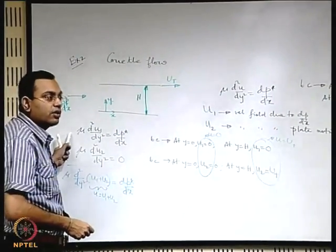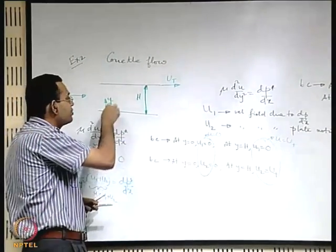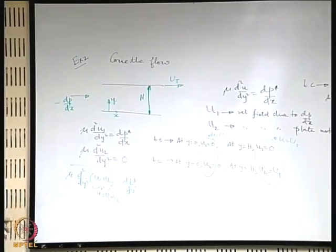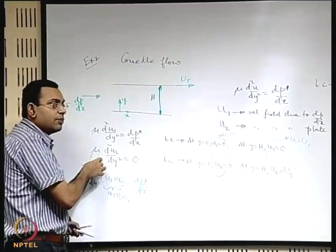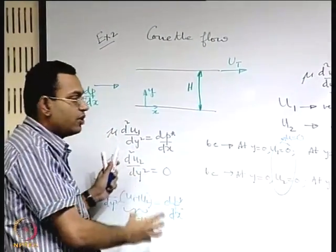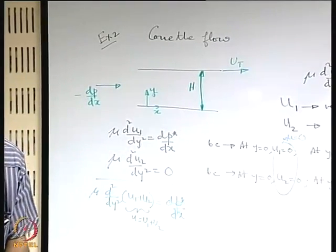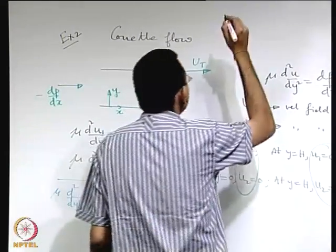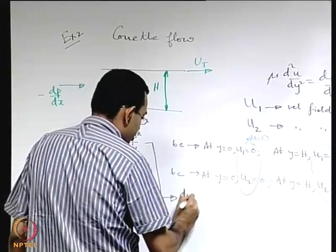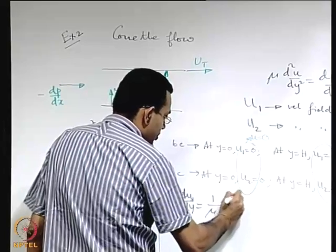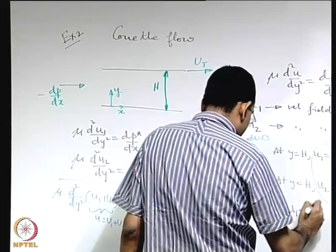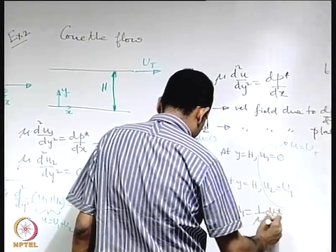The first problem for u1 is exactly what we solved for Poiseuille flow — only the coordinate axis has shifted to the bottom plate, which is a cosmetic change. The second part with u2 totally isolates the effect of the plate motion. Let us solve both. Integrating twice for u1: du1/dy = (1/mu)(dp*/dx)y + C1, and applying boundary conditions at y=0 and y=h where u1=0.